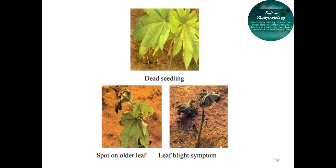The disease appears as circular dull green patches on both the surfaces of the cotyledon leaves. It later spreads and causes rotting. The infection then moves to the stem and causes withering and death of the seedling.